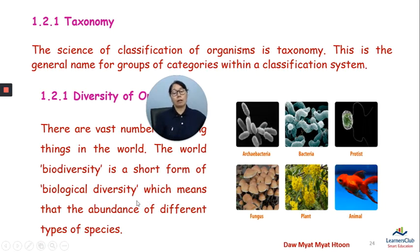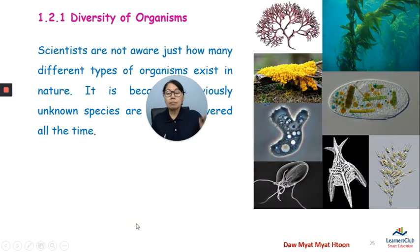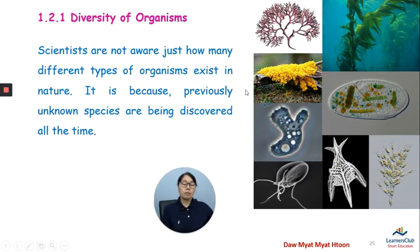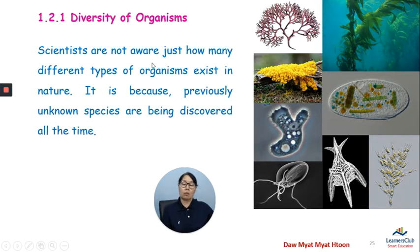Biological diversity means the abundance of different types of species. Scientists are not aware of how many different types of organisms exist in nature, because new animal species have been discovered all the time.